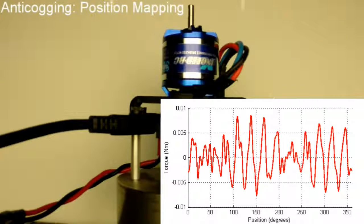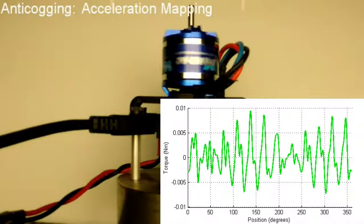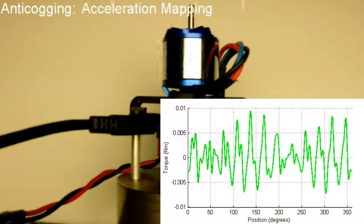The first method is to use position control at all positions and map the applied voltage or current when the motor is stopped. We can also compensate for static friction or stiction and transistor dead time with this method. The second method is to spin open loop as slowly as possible and map the accelerations.